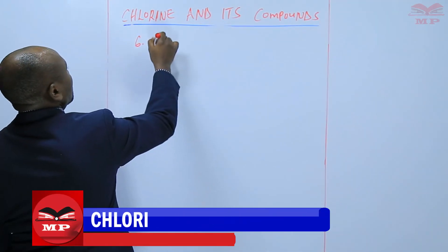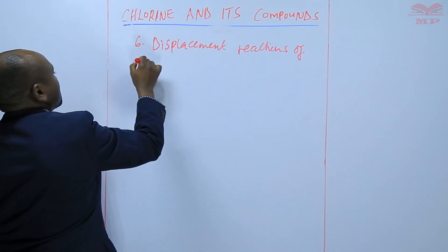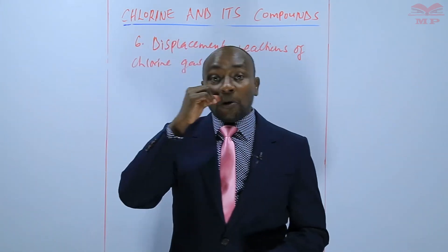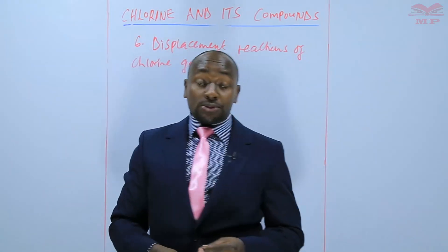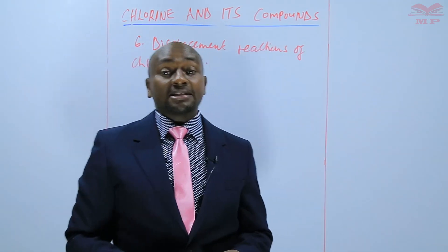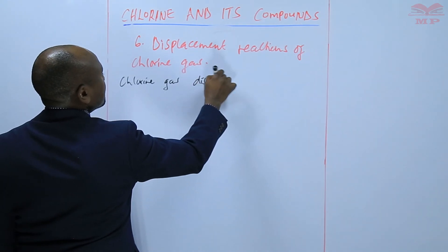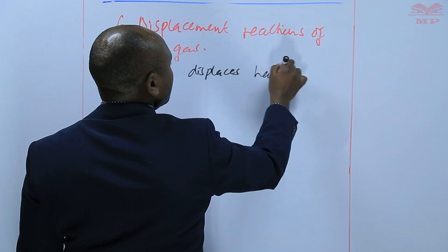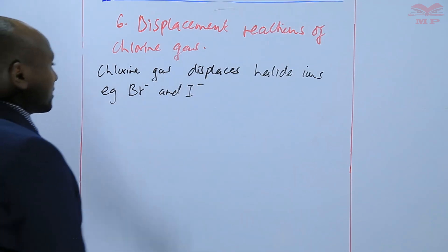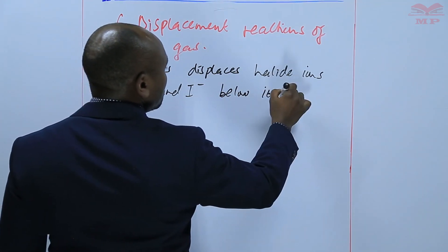So property number six: displacement reactions of chlorine gas. Chlorine displaces halide ions that are below it in the reactivity series. Chlorine gas displaces halide ions such as bromide ions and iodide ions — the halide ions that are below it in the reactivity series.